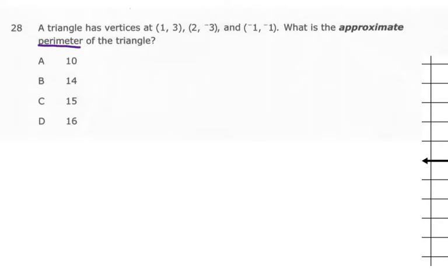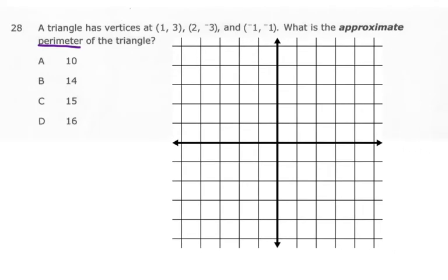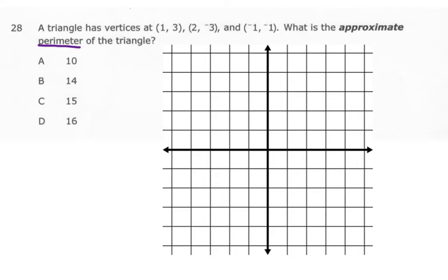Well, since they gave us ordered pairs and we have graph paper, my first thing is just going to be to graph this triangle and see what it looks like. So (1, 3), I go right 1, up 3, and put a point. (2, -3), go right 2 and down 3, put a point. And then (-1, -1) is left 1, and then down 1. And I'm just going to connect those 3 points and make a triangle.